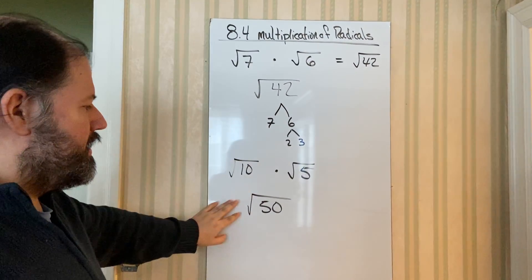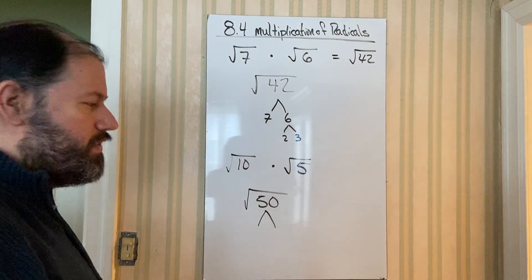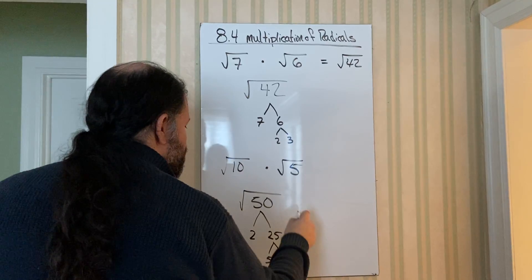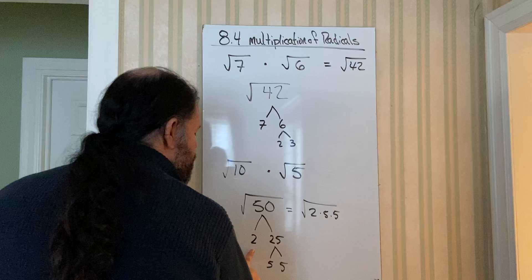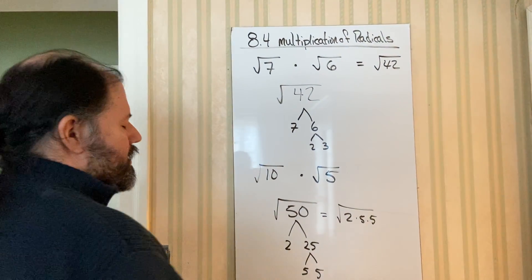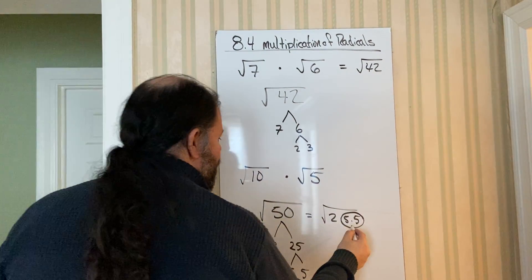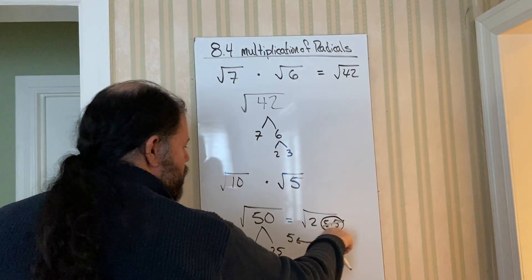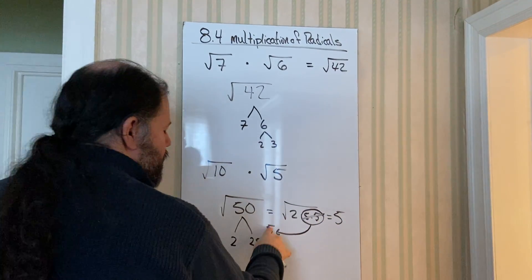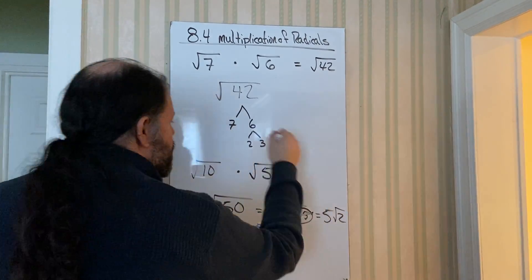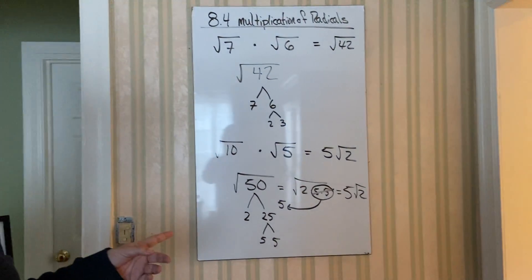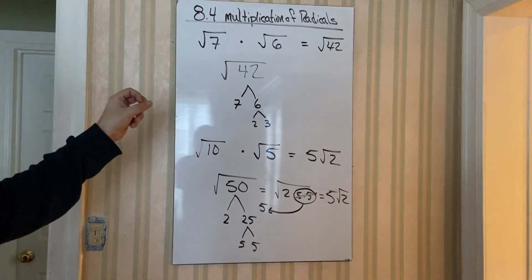Breaking down 50: it's 2 times 25, and 25 is 5 times 5. So square root of 50 has factors 2, 5, 5. We have a pair of 5s — like a matching pair of socks — so we ball them up and take them out of the laundry basket. That pair becomes one set on the outside. The 2 stays inside. So the answer is 5 times square root of 2. Remember: same roots, inside with inside, outside with outside, then simplify.